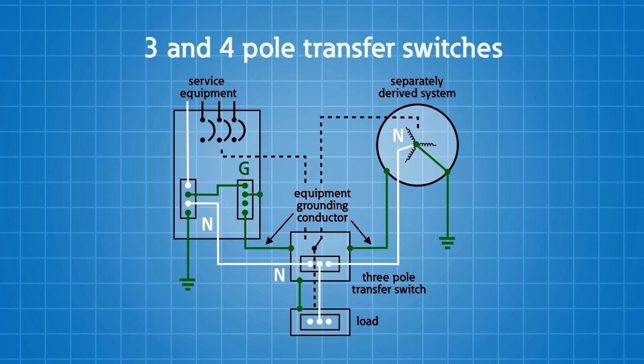So when I have a neutral conductor bonded and grounded in two separately derived systems - remember, I have it grounded and bonded in my service panel and in my generator - I need to make sure that I only have one place where that occurs.